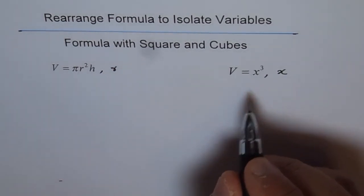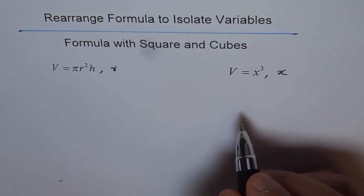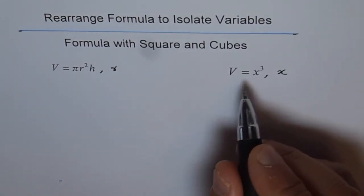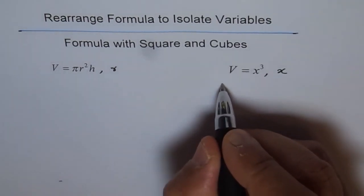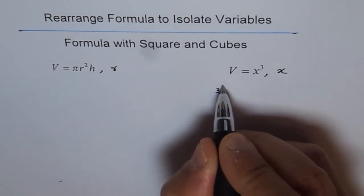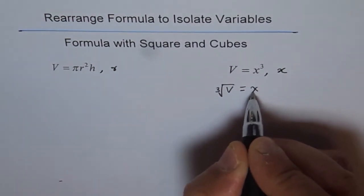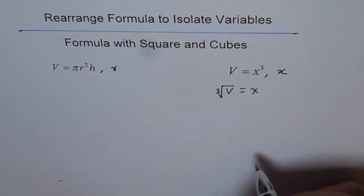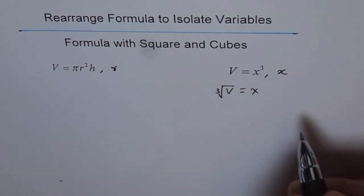So for cube it is cube root. Like for square we do square root. For cube we do cube root. So volume's cube root we write like this. Volume's cube root is equals to X. So that is how we isolate X here. So let's understand what is cube root.